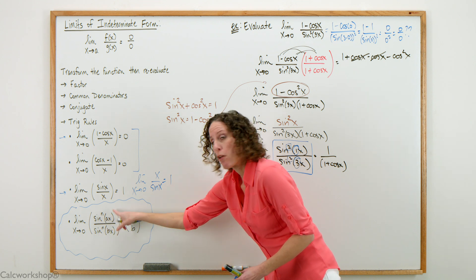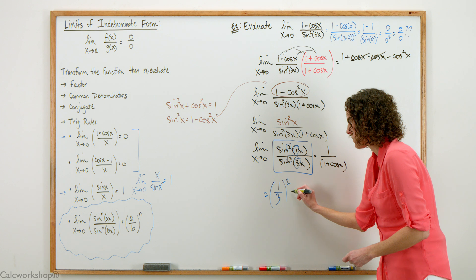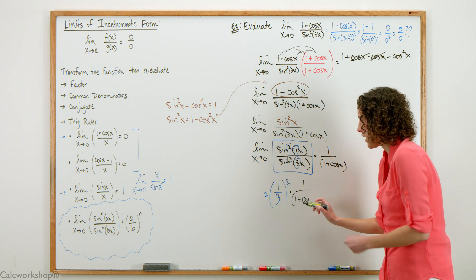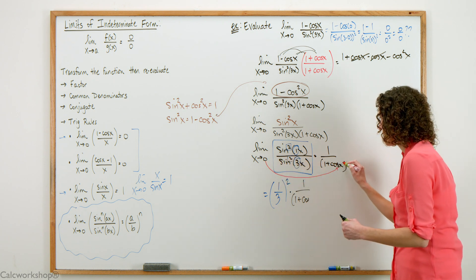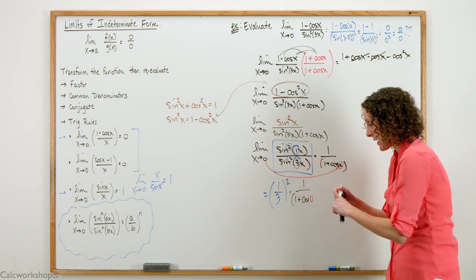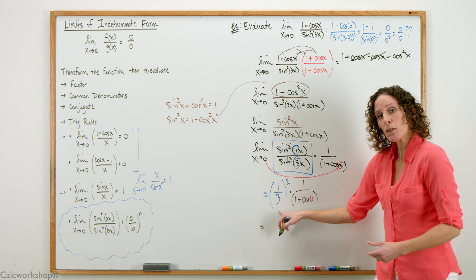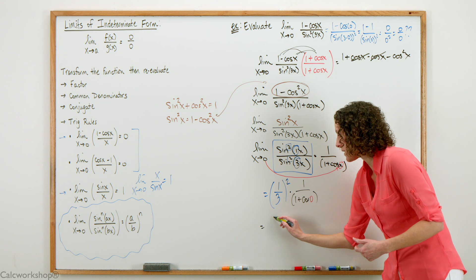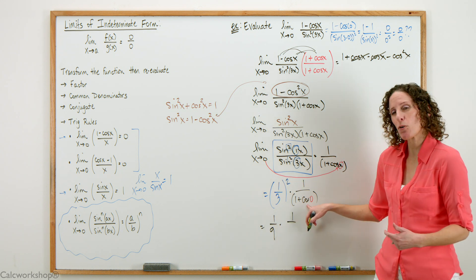This is the same thing as 1 third because I'm pulling those coefficients out, quantity squared. I'm pulling out the square based on the property. Whatever that exponent is, I'm going to square those leading coefficients times 1 over 1 plus the cosine of 0. I'm going to plug that 0 into that function and evaluate.